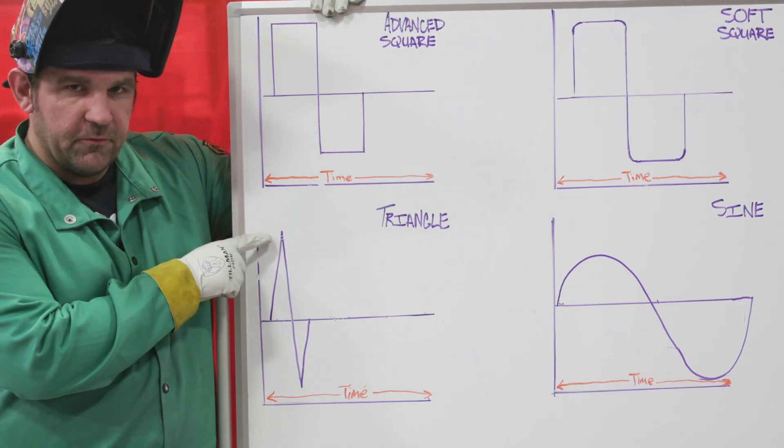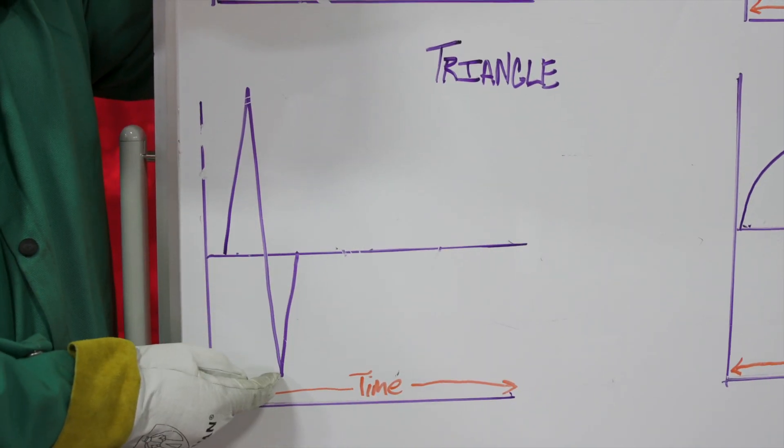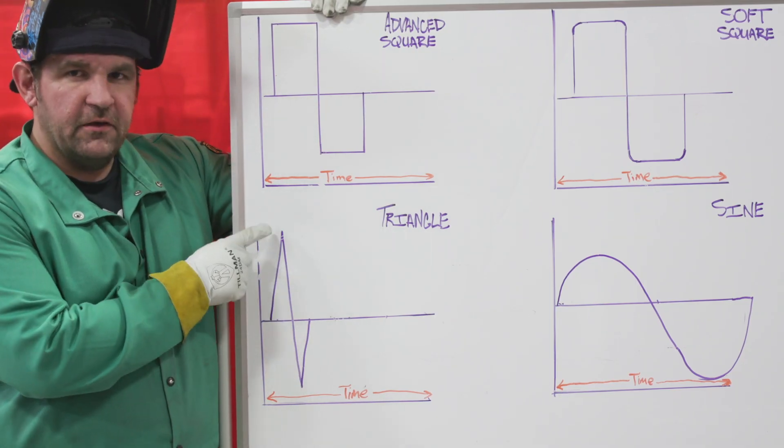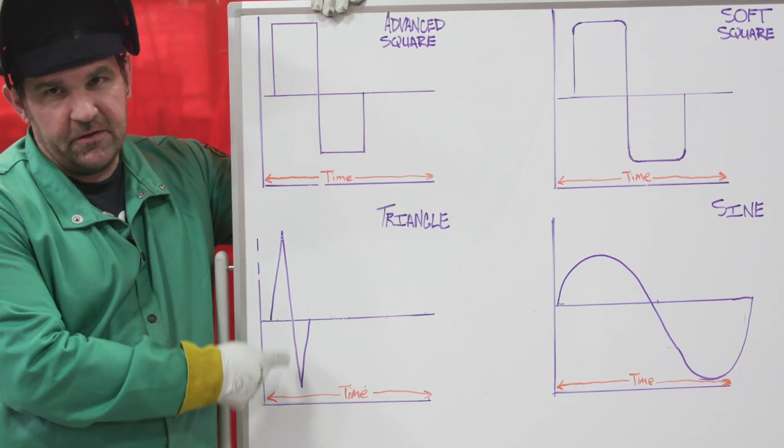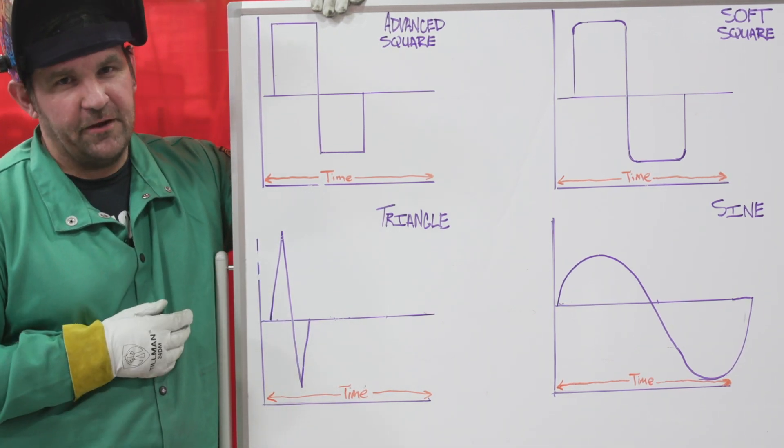You can see with the triangle wave, we're spending a very little amount of time at our peak electrode positive and our peak electrode negative amperage with a very quick changeover rate. So this is going to give us very low heat input, but a very stable arc. So this is great for thin materials. Let's go back to the table and run some triangle wave.